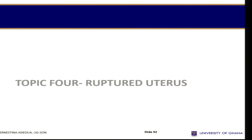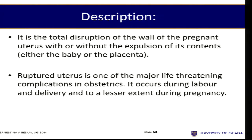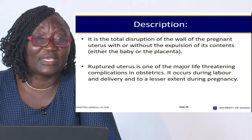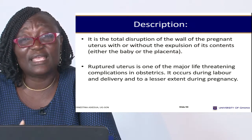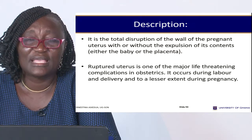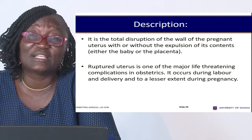Topic four: ruptured uterus. Ruptured uterus is a total disruption of the wall of the pregnant uterus with or without expulsion of its contents — either the baby or the placenta. The walls of the uterus are disrupted, the baby may still be inside or may be expelled, but the skin remains intact. It is one of the major life-threatening complications in obstetrics, coming with very severe pain which can lead to shock.